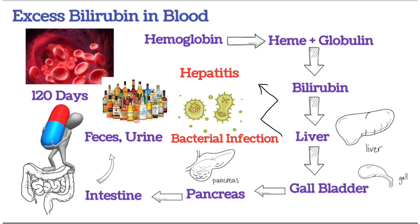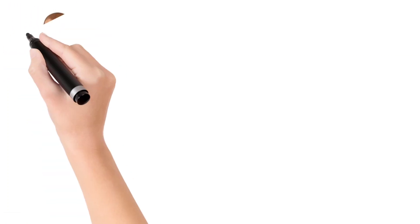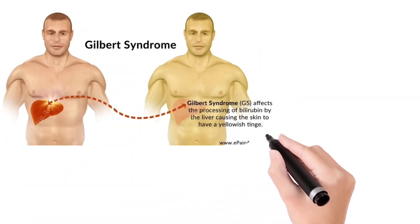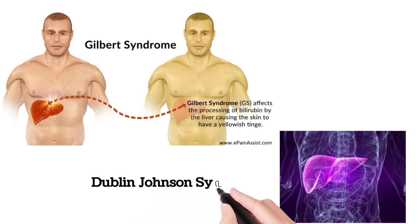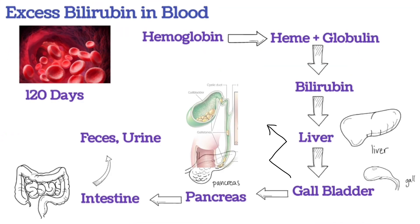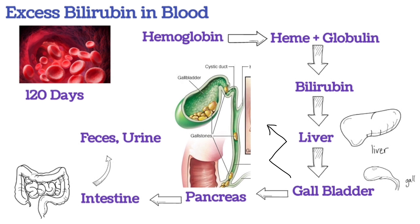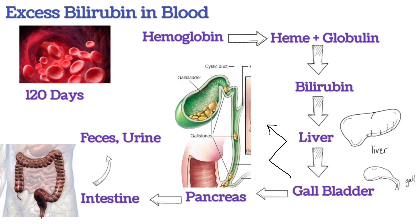Finally, jaundice. Certain genetic disorders or birth defects like Gilbert syndrome, Dubin-Johnson syndrome, or if there is obstruction in the gallbladder like gallbladder stones, pancreas infection, intestinal infection, or any cancer-related problems, there is accumulation of bilirubin causing jaundice.